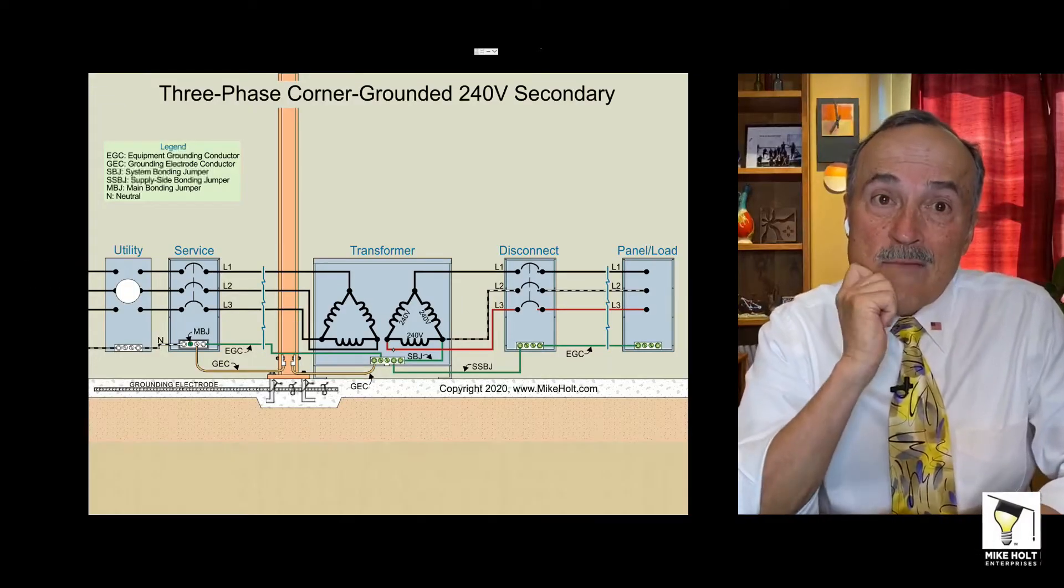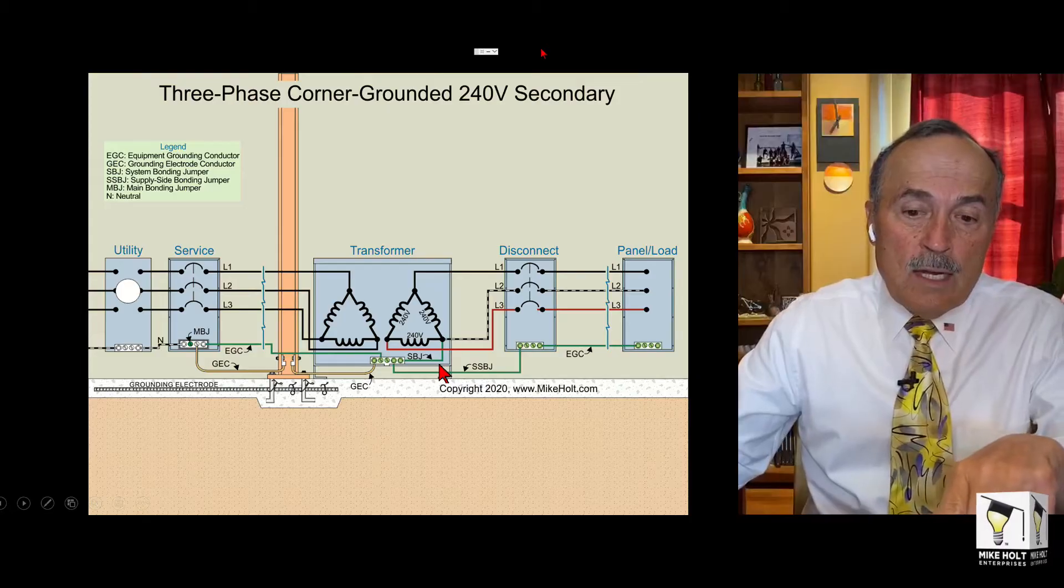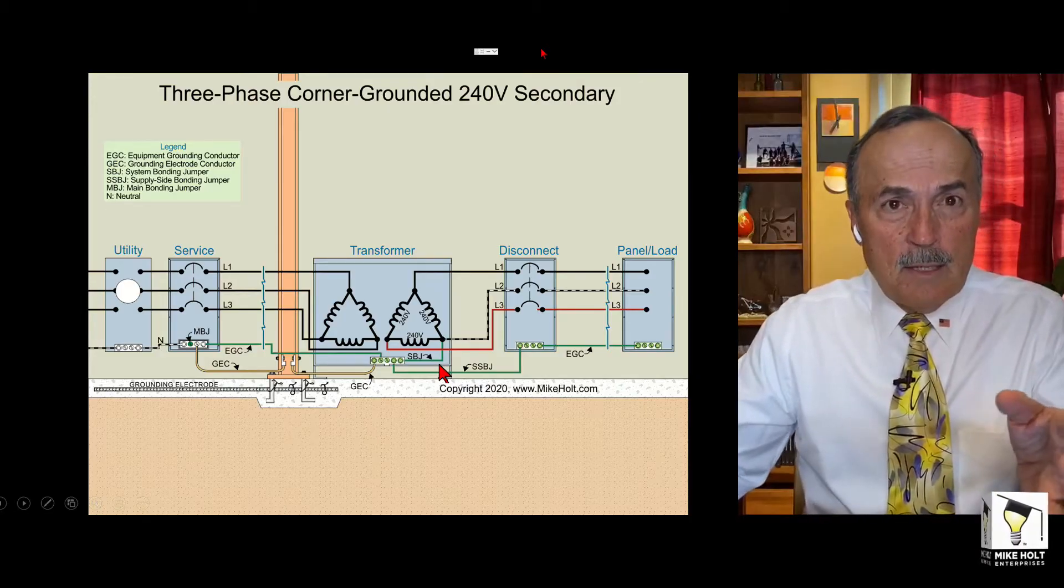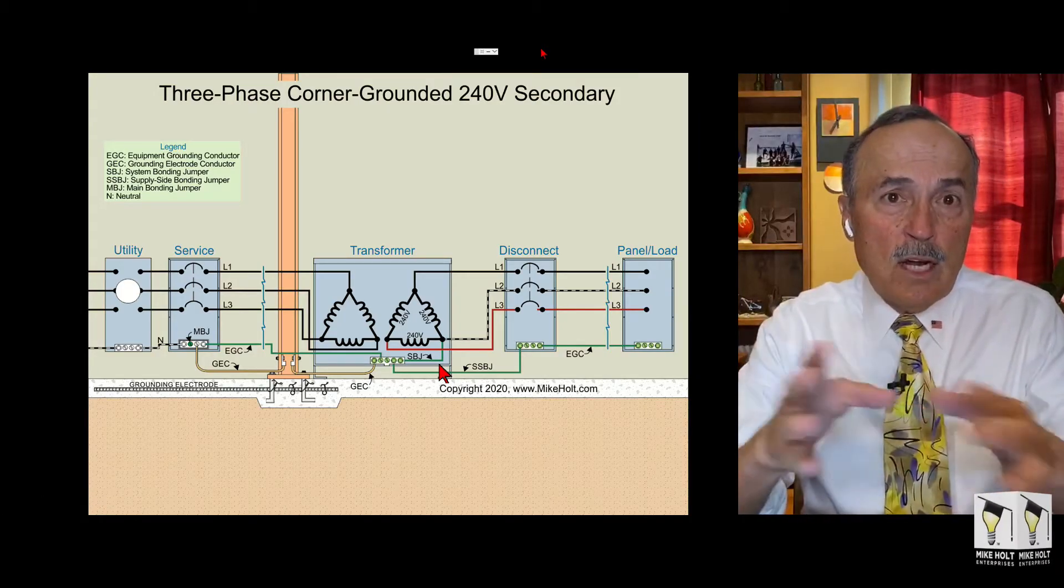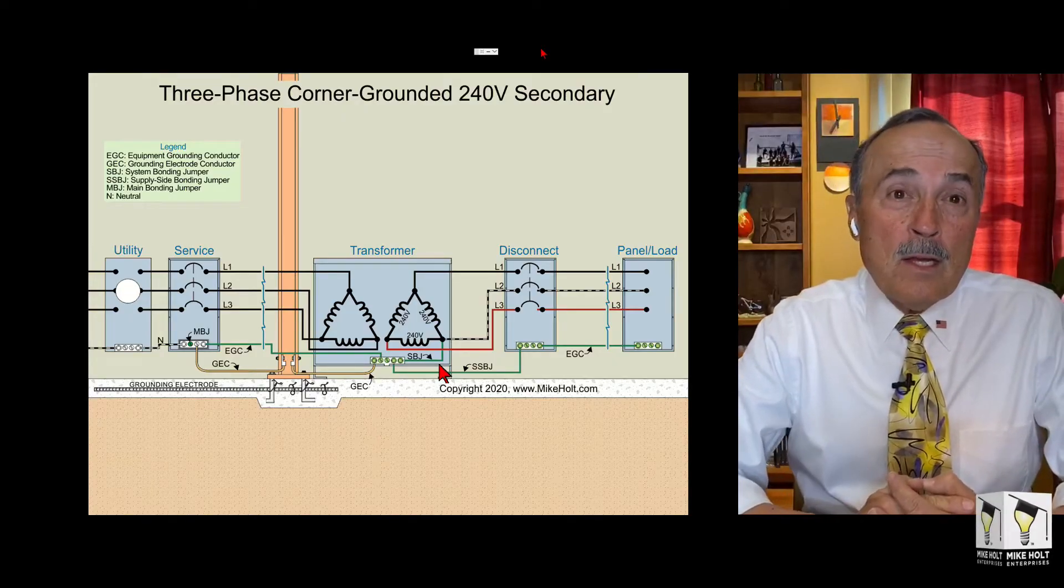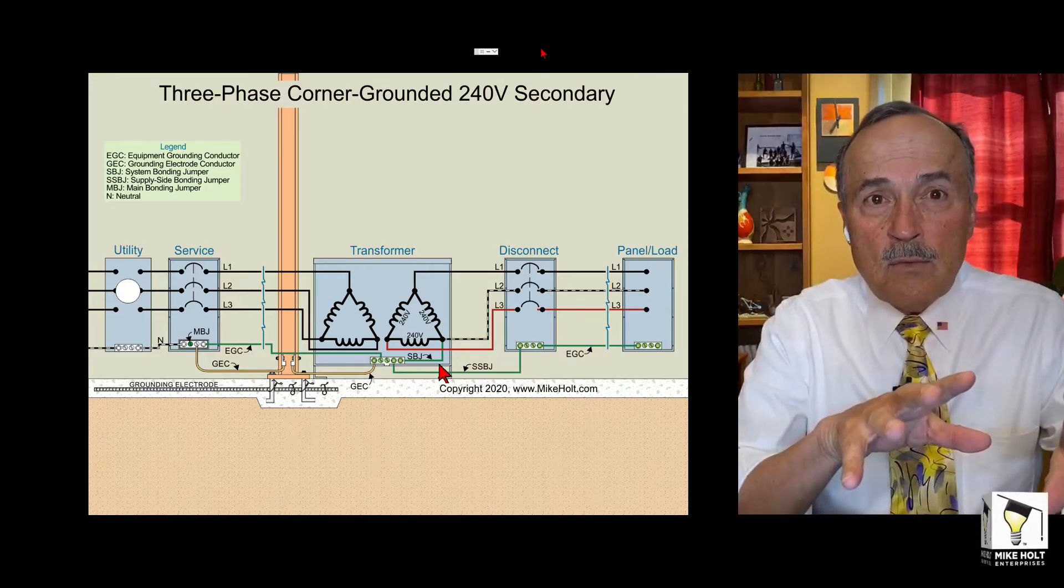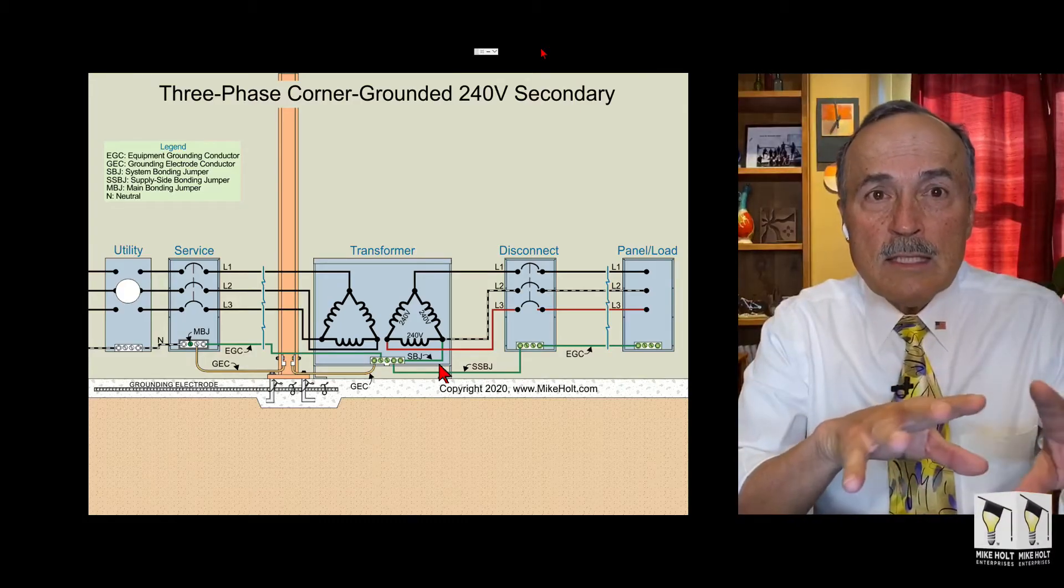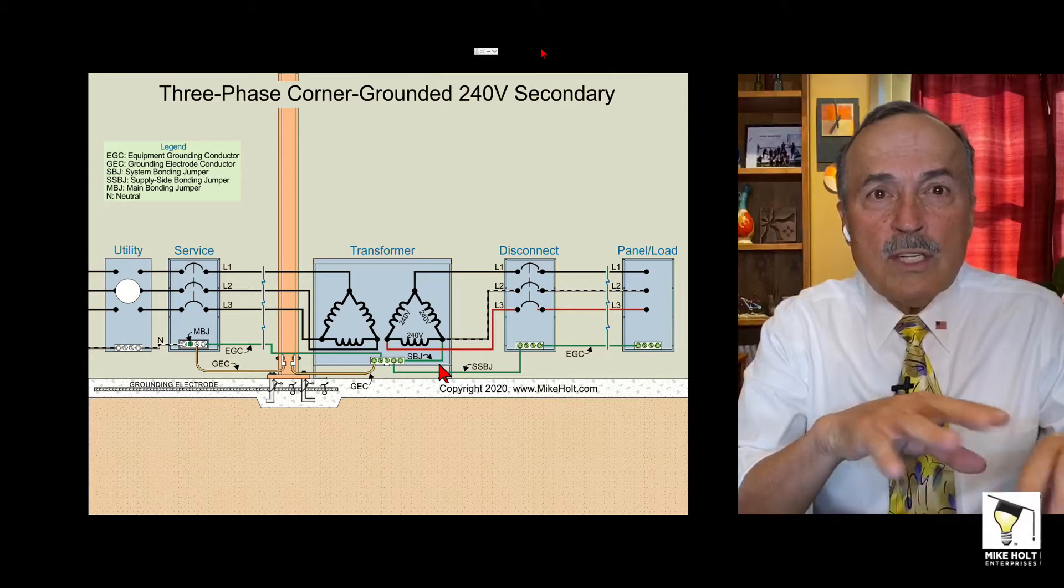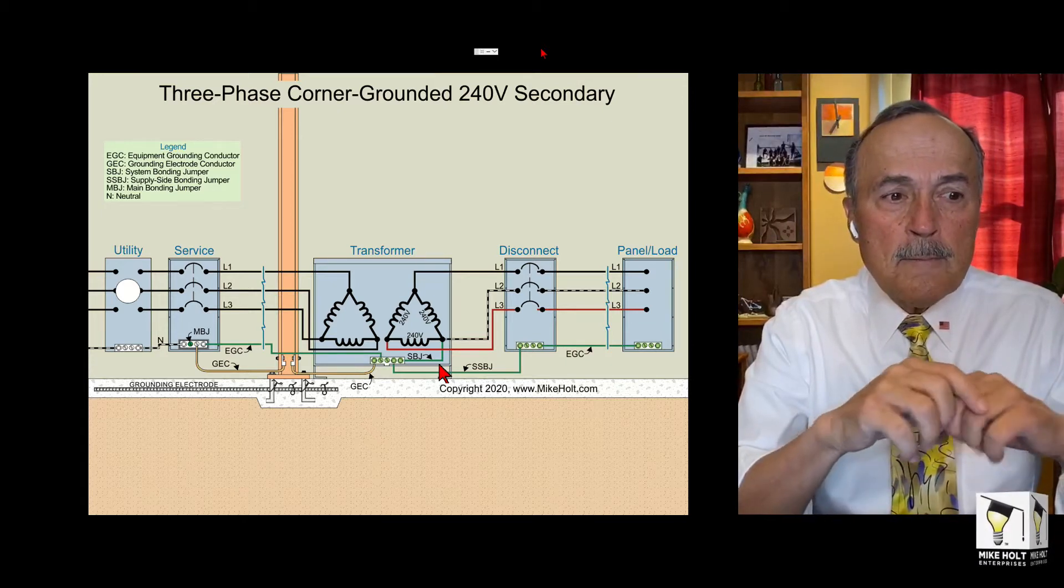So I'm going back to my graphic. If you corner ground a system, why do you corner ground a system? The reason they corner ground systems is because they would take the ungrounded systems that were installed for many years, and ungrounded systems create problems. There's restriking ground faults, ferroresonance, and other areas that cause a high voltage capacitive charge to get on a system.